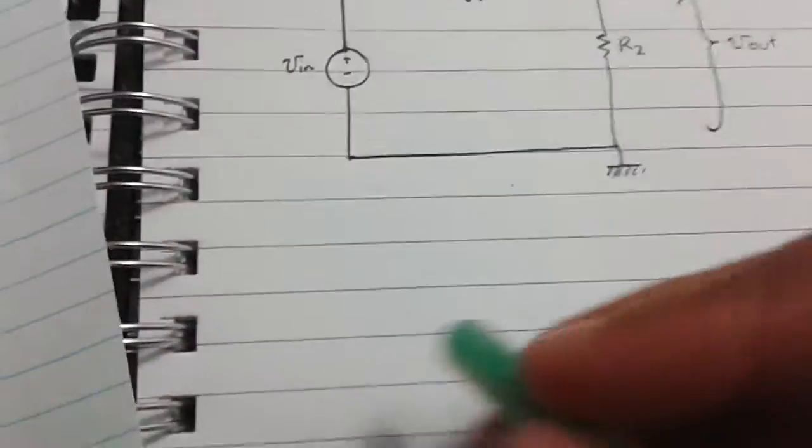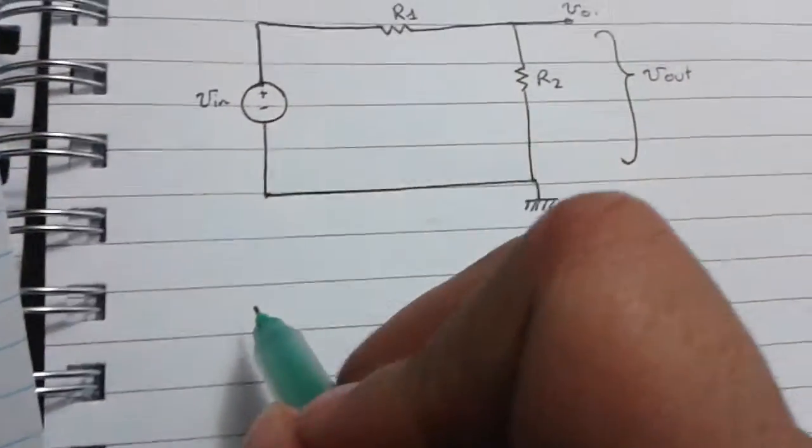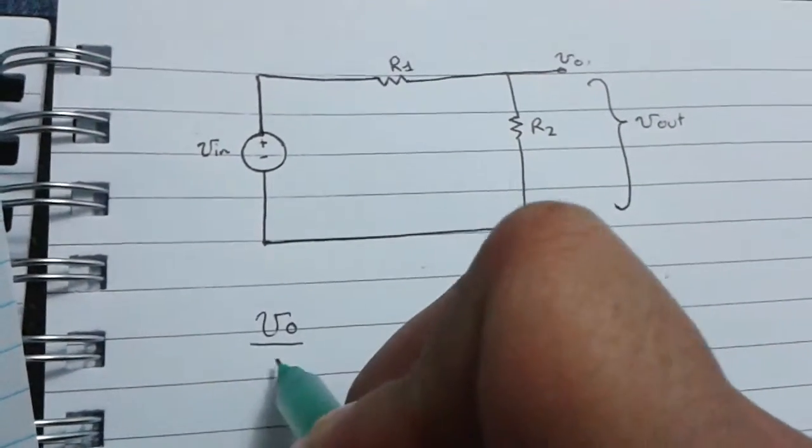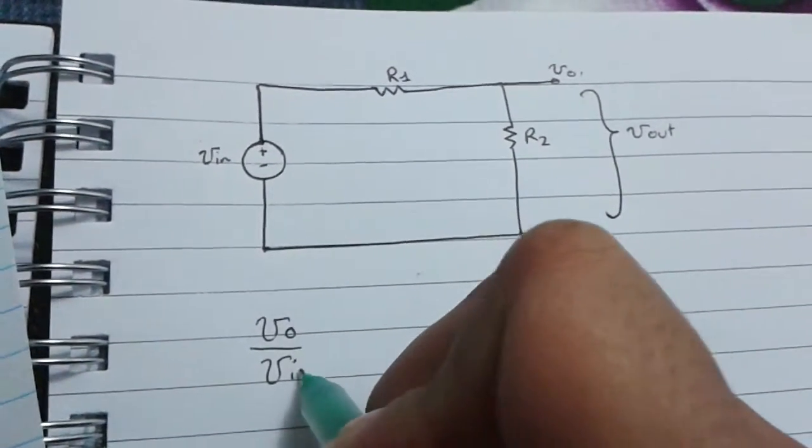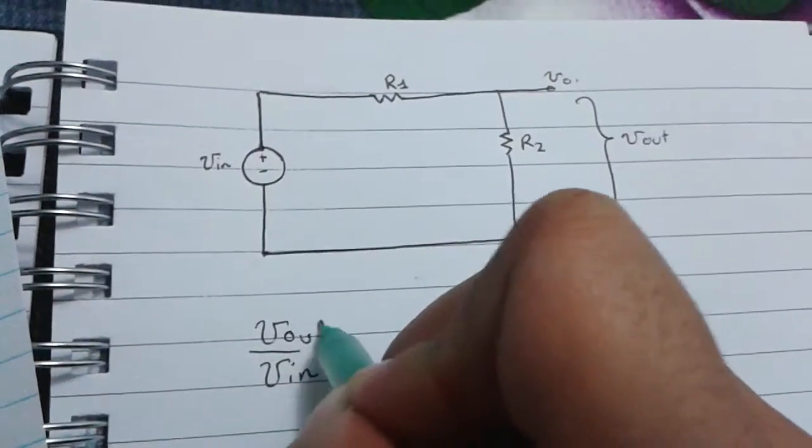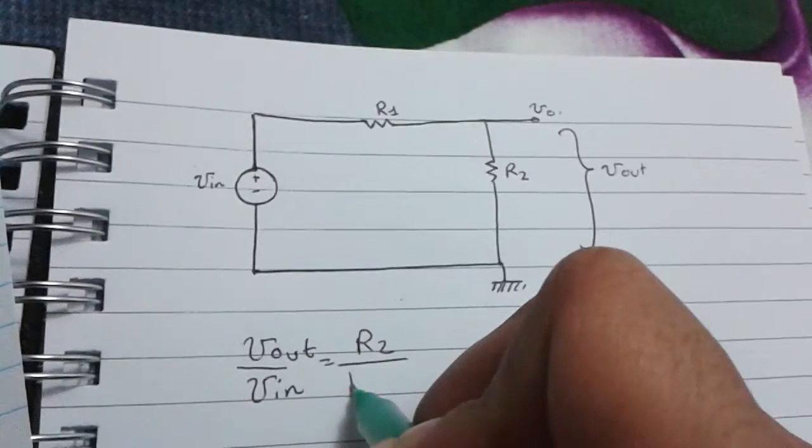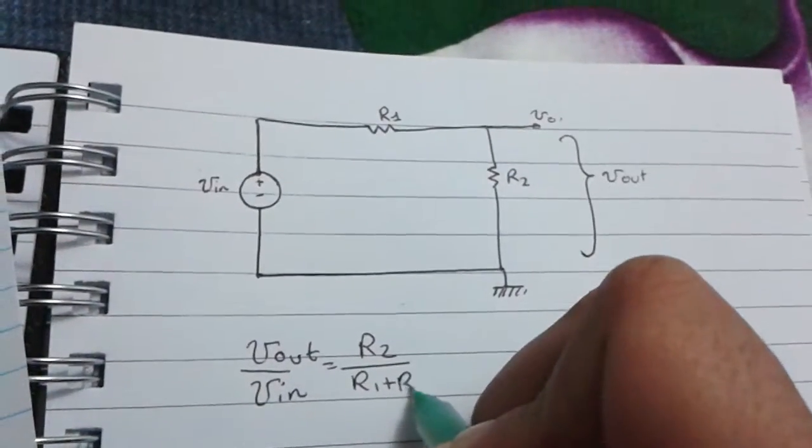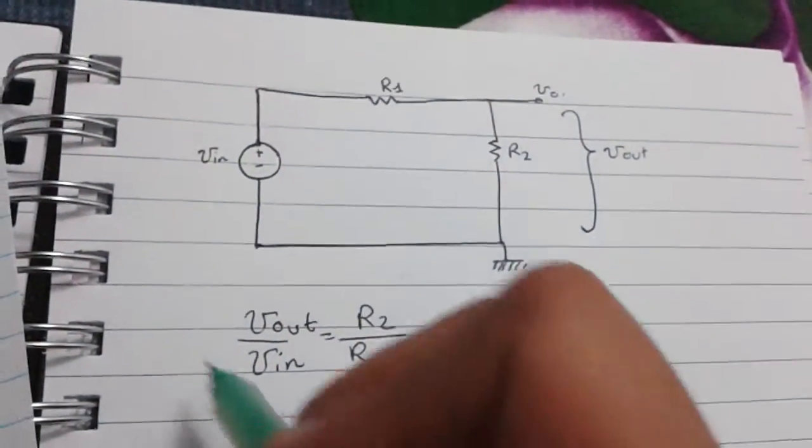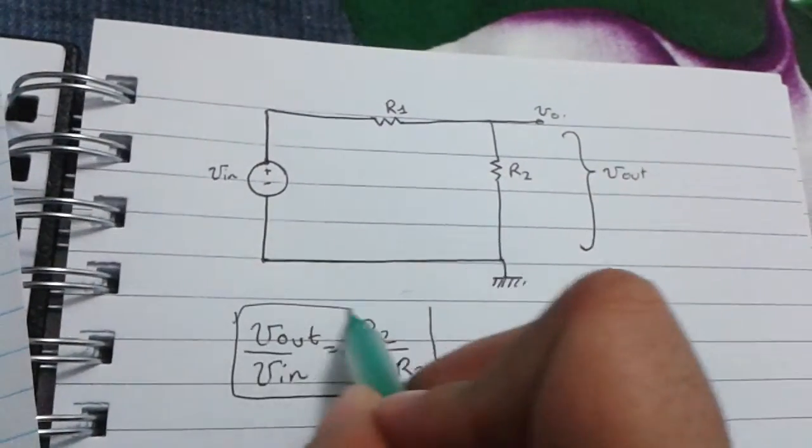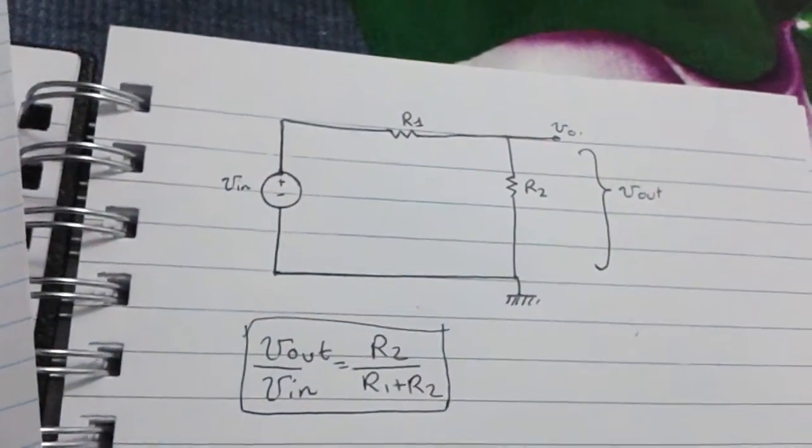The voltage divider can be written as R2 over R1 plus R2, right? So remember this equation, very important equation, okay?